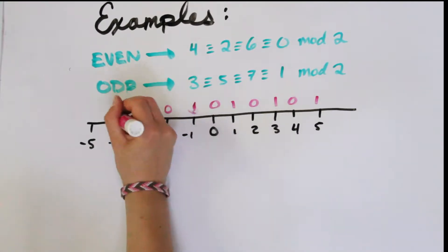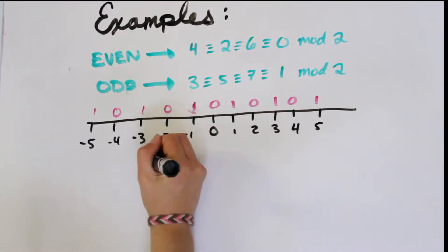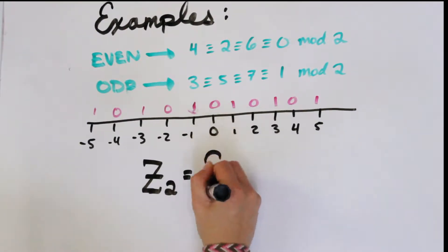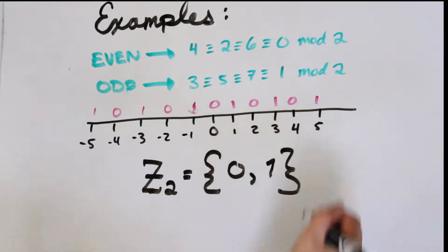We can say that Z_2, the set of remainders mod 2, is {0, 1}, and this is the notation that is commonly used in modular arithmetic.